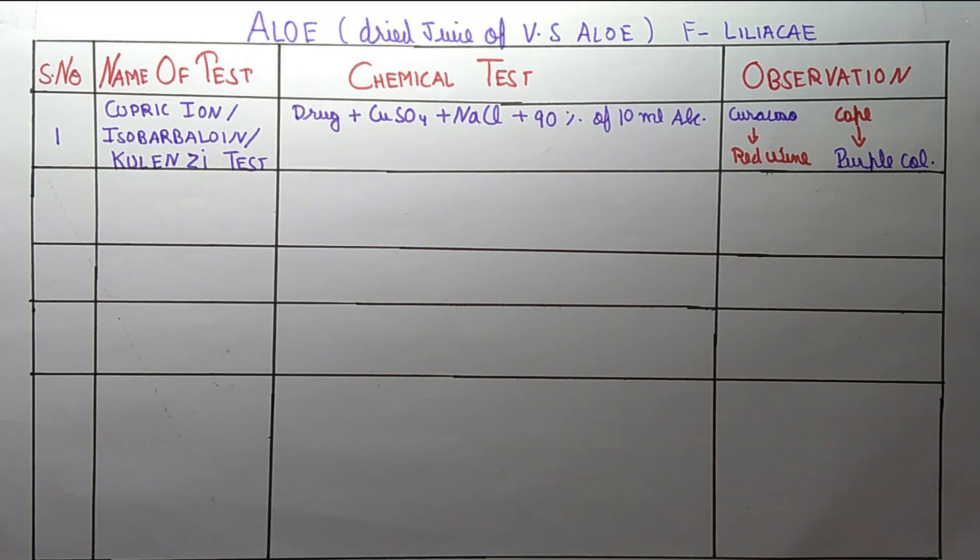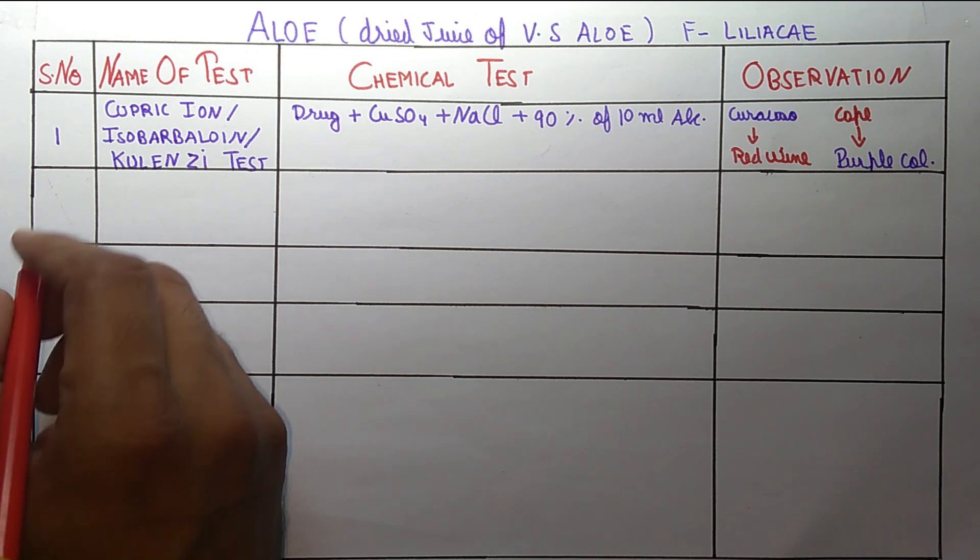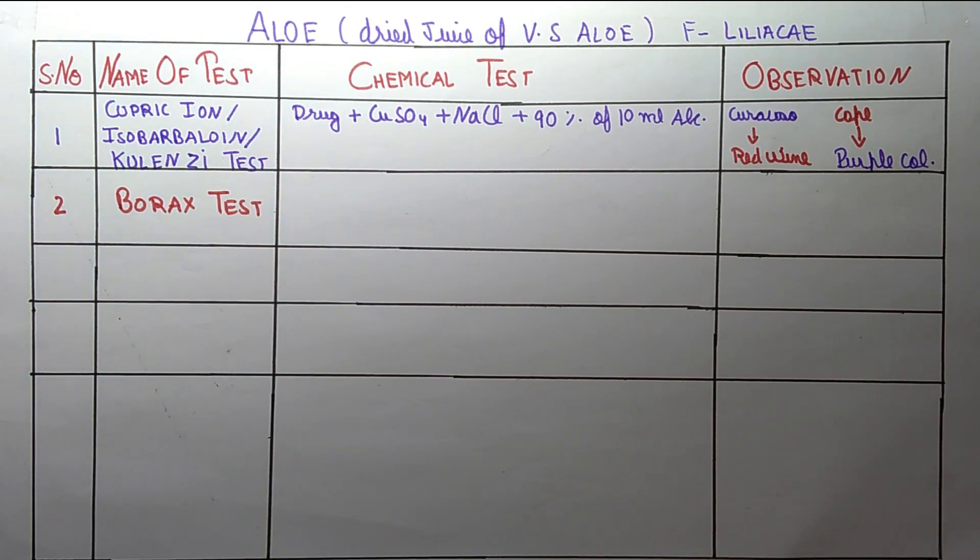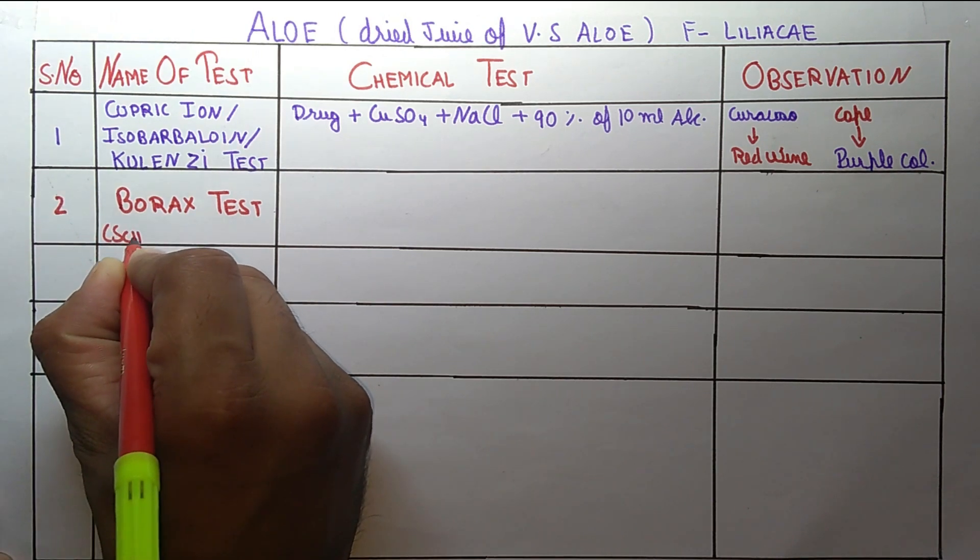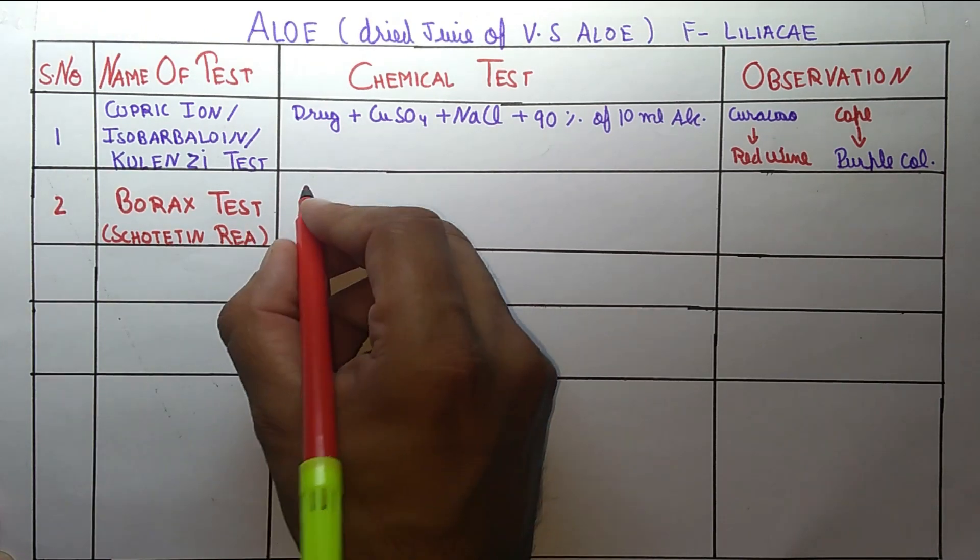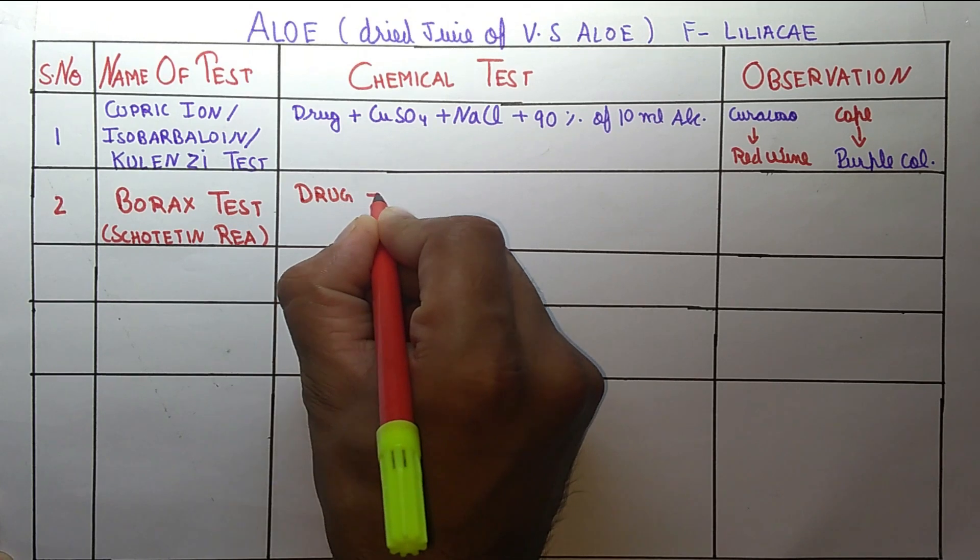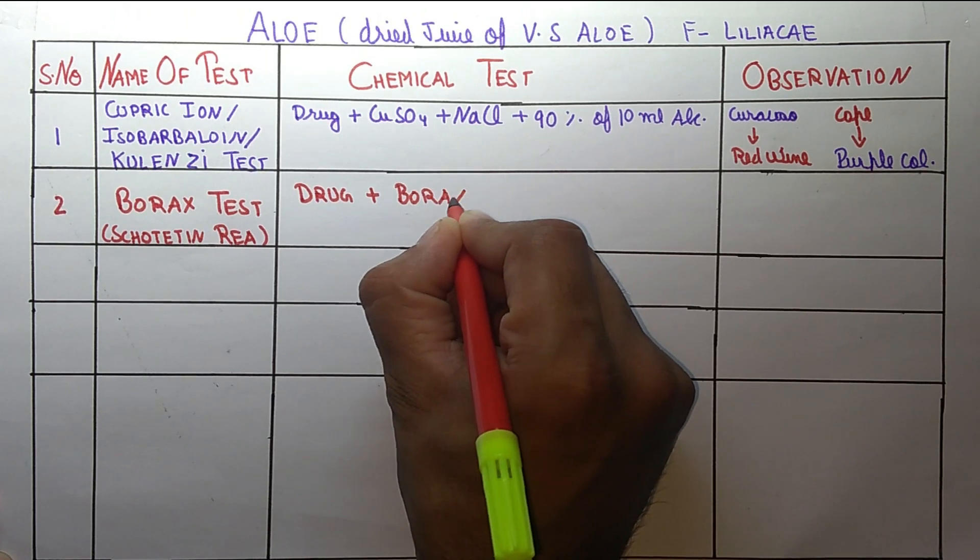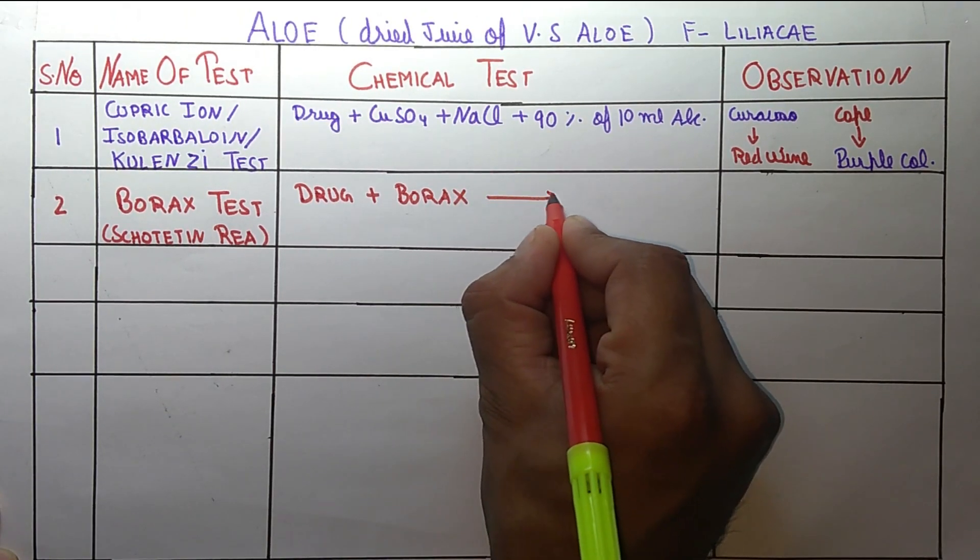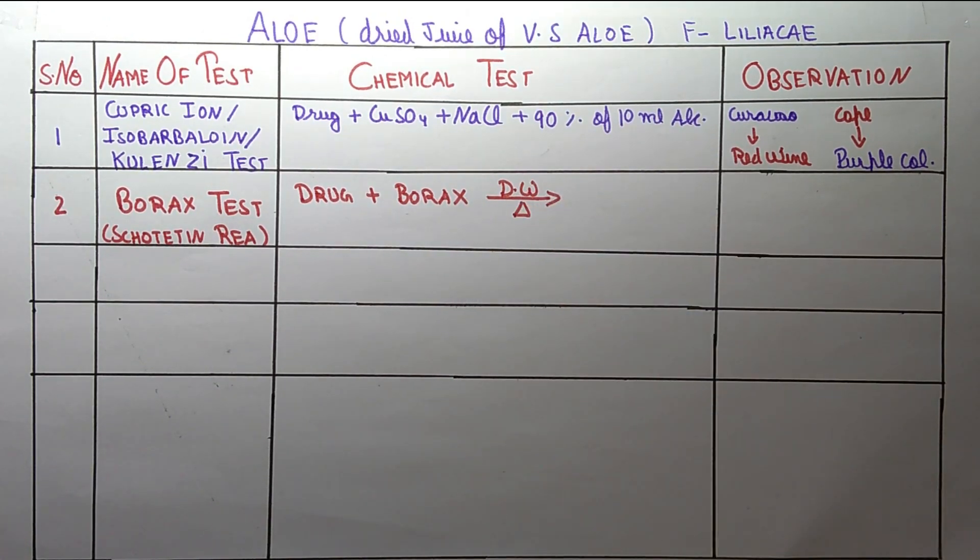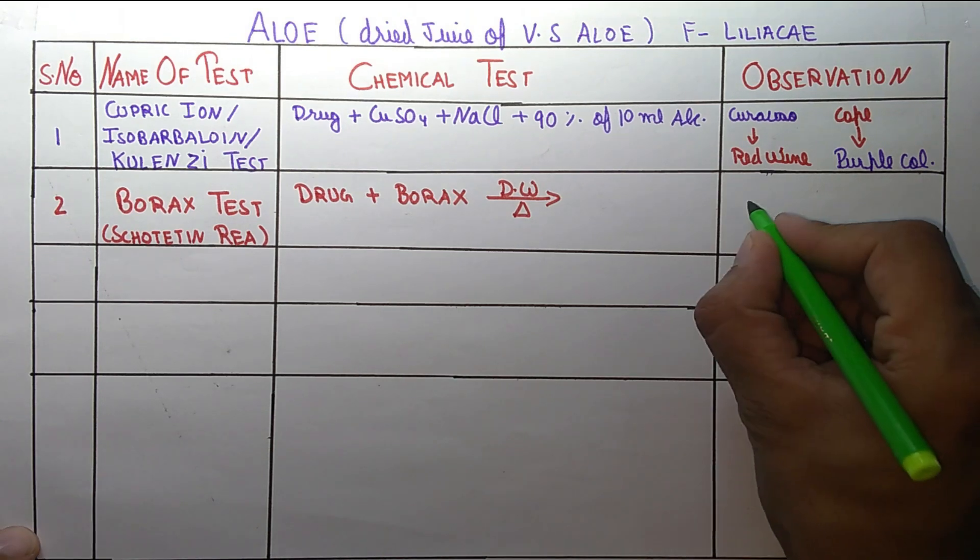Now the next test is the Borax test, and it is also known as Iscode that in reaction. In this we take drug plus borax in the presence of distilled water and heat. What it gives? It gives the green